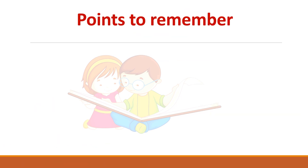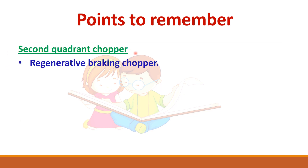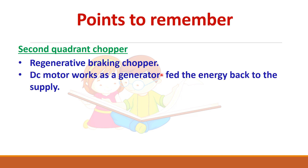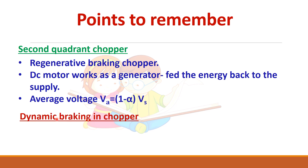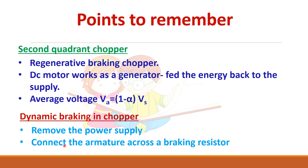To summarize: this is a second quadrant chopper, also called a regenerative braking chopper. Here the motor works as a generator and feeds energy back to the supply, and the average voltage is given by (1 − α)·Vs. For dynamic braking, the power supply is removed and a braking resistor is connected across the armature.